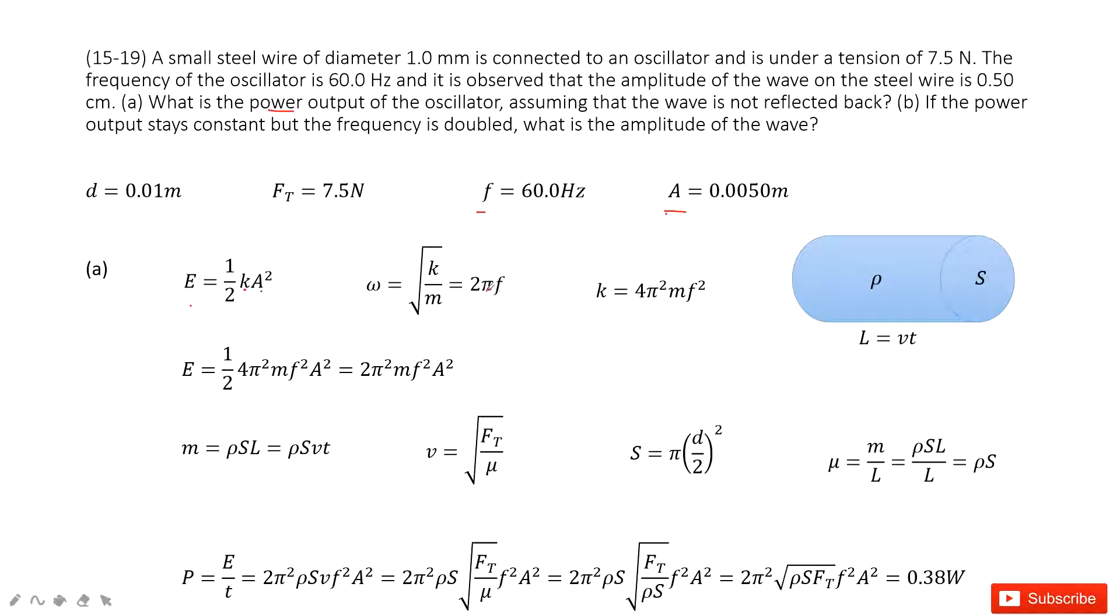Because for one circle it moves, it'll rotate 2π, so 2πf. In this way we can find k.